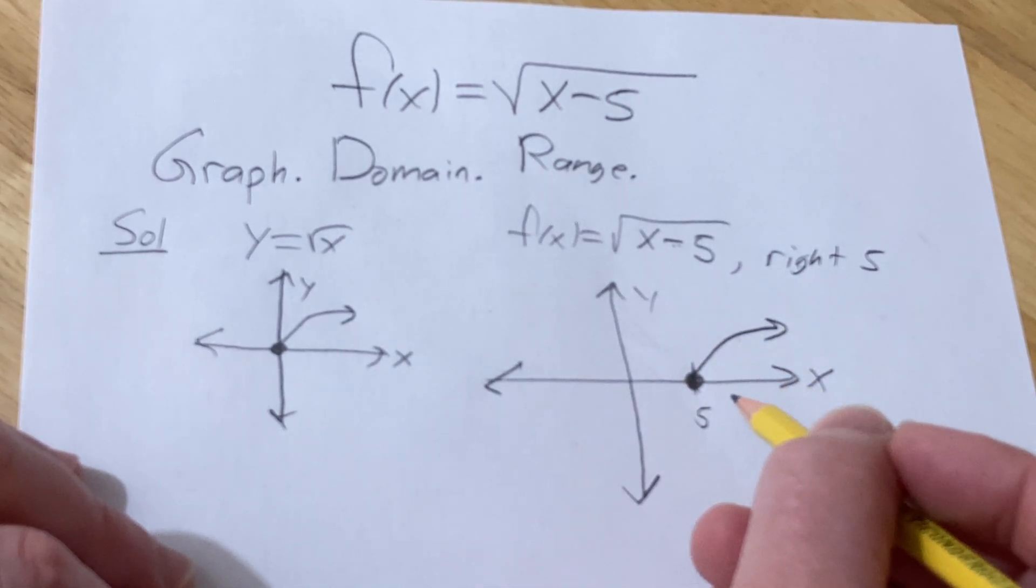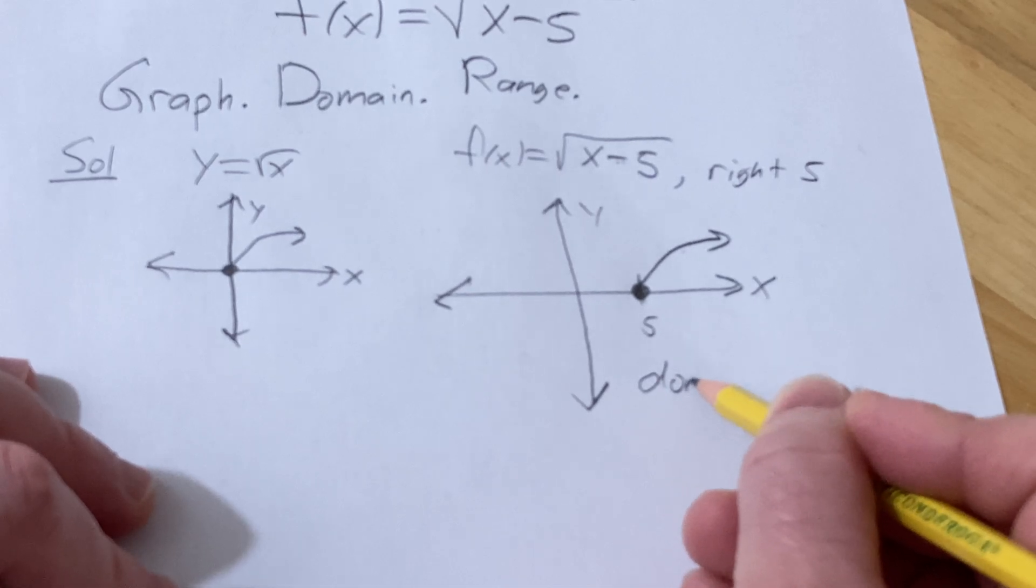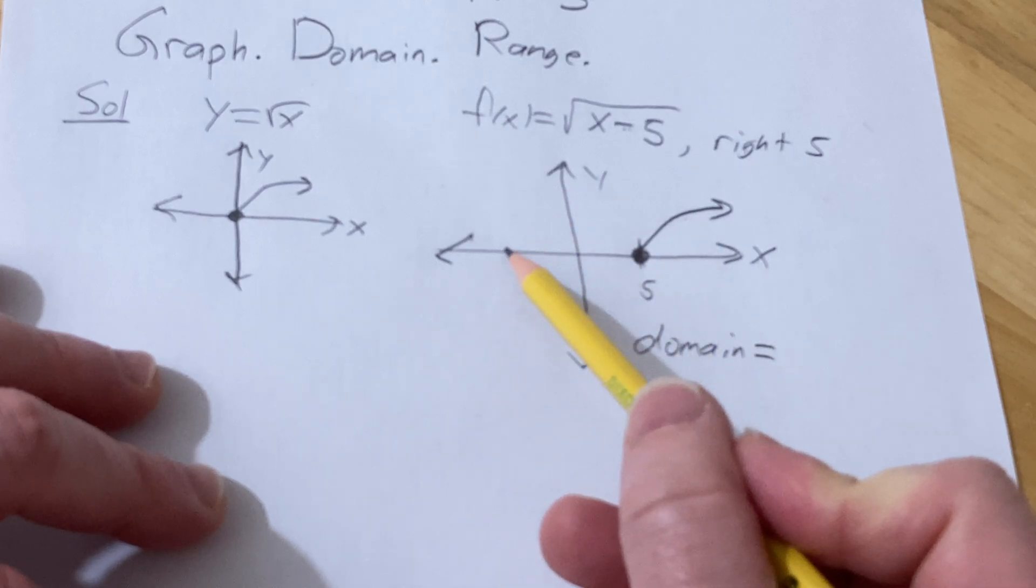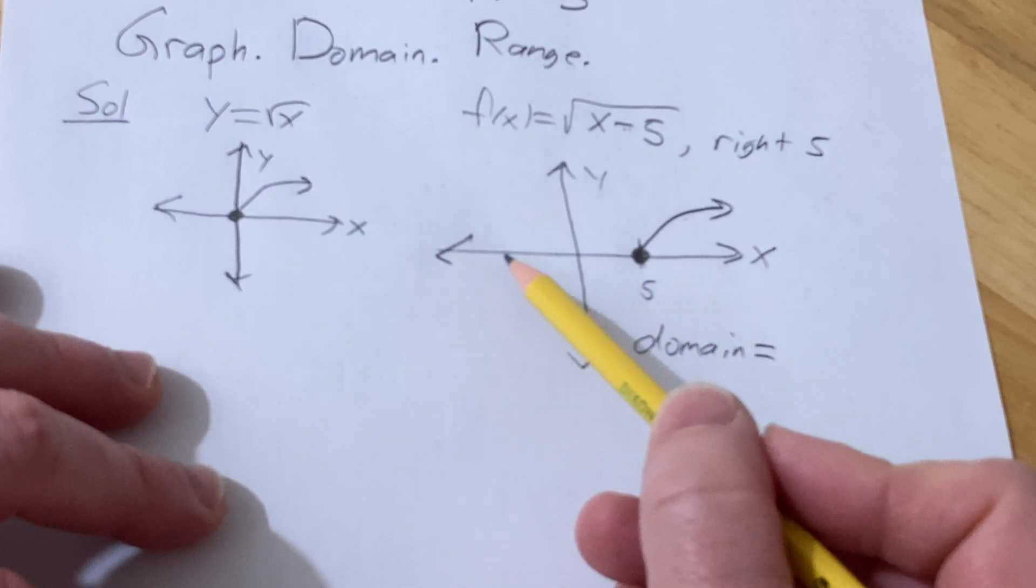And so now from the picture, we can get the domain. The domain is a set of all x values that give rise to y values. So if I pick an x value here, there's no y value on the graph.